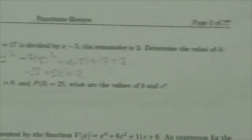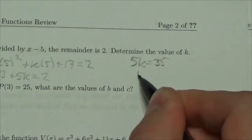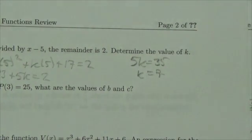Now, bring the negative 33 over, and we get 5k is equal to 35, so k is equal to 7.